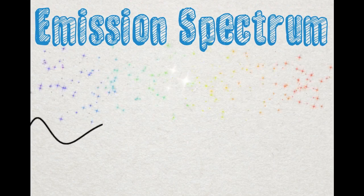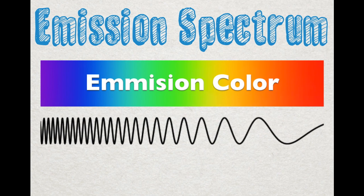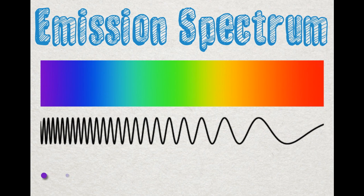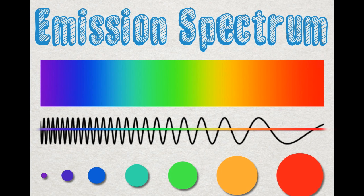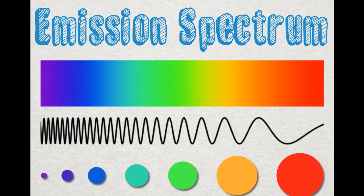One of the unique properties of quantum dots is that their emission color depends on their size, not their material. The bigger the quantum dot, the larger the wavelength and the smaller frequency it will emit. The color of light is dependent on its wavelength, so this means that the largest nanocrystals will emit red light and the shortest will emit blue, with all the other colors appearing in between.